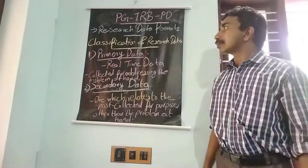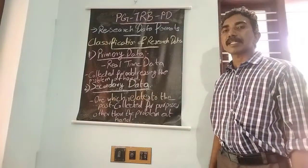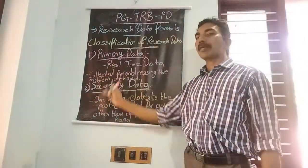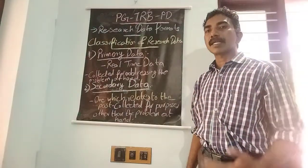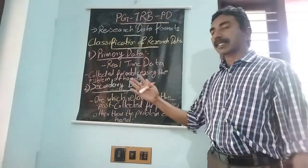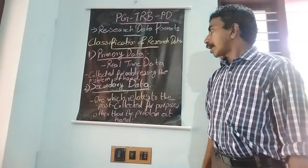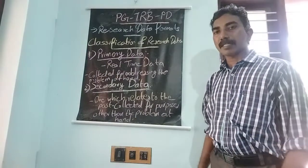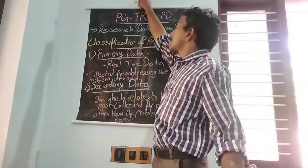Research data can be classified into two types. They are primary data and secondary data. Primary data is real-time data. Secondary data means past. Primary data is collected for addressing the problem. Secondary data is collected for purposes other than the problem.